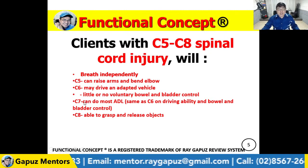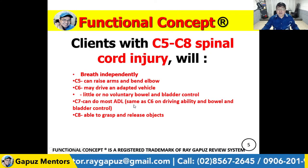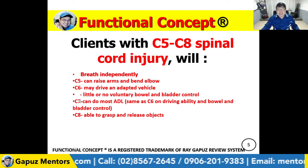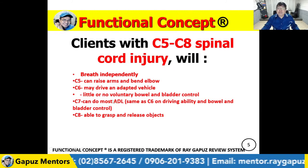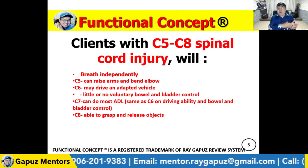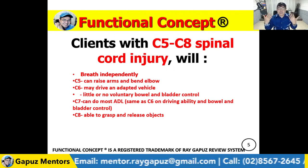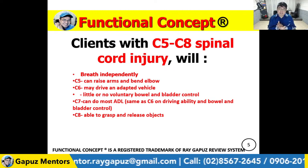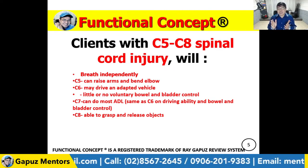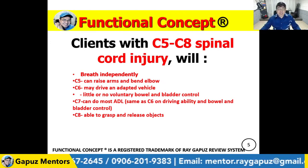A client with C7 injury can do most activities of daily living, needing minimal assistance. That's the difference: for C1 to C4, the client is paralyzed from the neck down, requiring complete assistance with all activities of daily living. For a client with C7 injury, they can perform most activities of daily living independently. For C8 injury, the client is able to grasp and release objects.